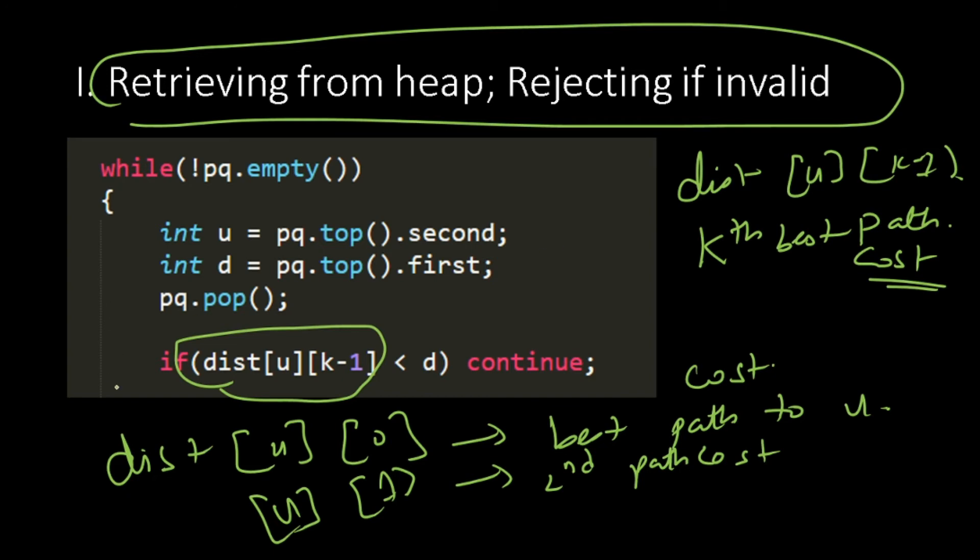Keep that in mind. So this means k-th best path cost. This will be using repeatedly.